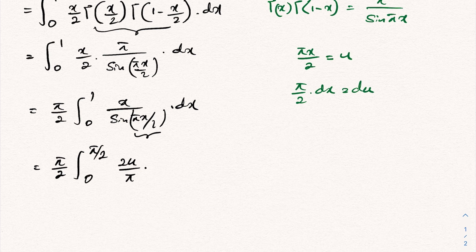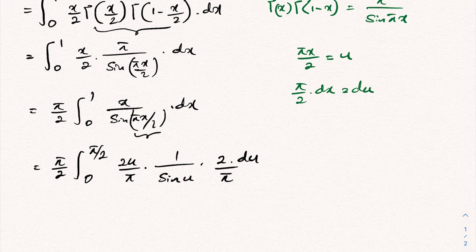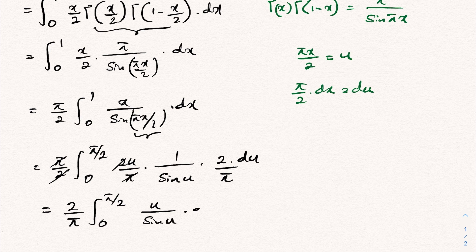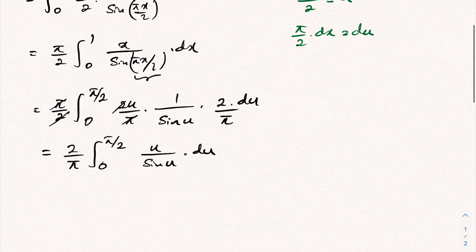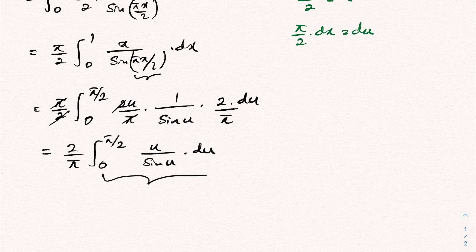Substituting in, sine of (pi*x/2) becomes sine of u, and dx becomes 2 du/pi. The pi's cancel and the 2's cancel, leaving the constant 2/pi outside the integral sign, giving us (2/pi) times the integral from 0 to pi/2 of u over sin(u) du.